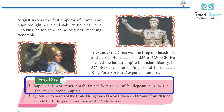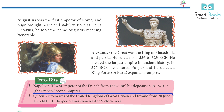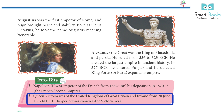Napoleon III was emperor of the French from 1852 until his deposition in 1870–71, during the French Second Empire. Queen Victoria was queen of the United Kingdom of Great Britain and Ireland from June 20, 1837 to 1901. This period was known as the Victorian Era.